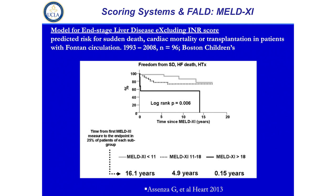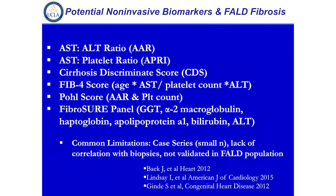Another predictor is MELD-XI — the model for end-stage liver disease excluding the INR — and this was mostly for patients on Coumadin, making the INR a less useful tool. The group at Boston Children's had stratified patients, and survival transplant-free was significantly impacted in patients with higher MELD-XI scores. Some of the noninvasive biomarkers — the FibroSure panel is the most commonly used these days — and we need to develop multicenter validation of that as a tool.